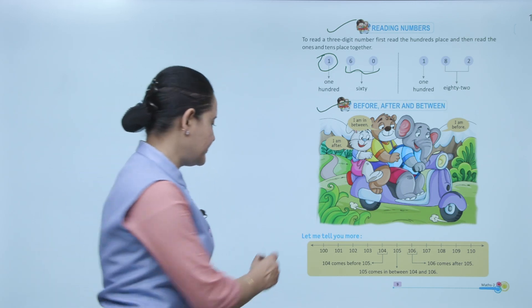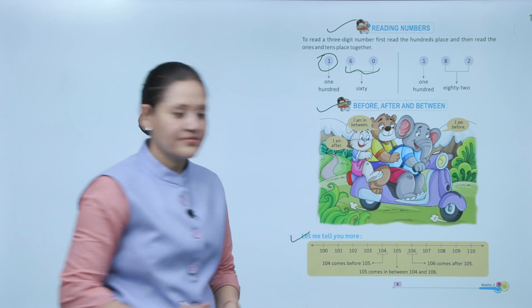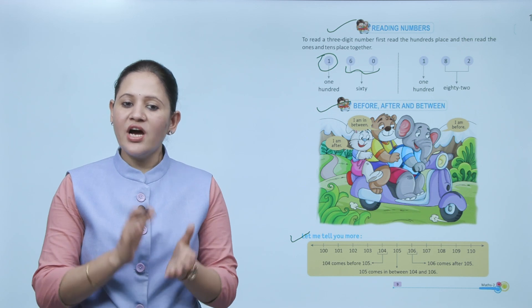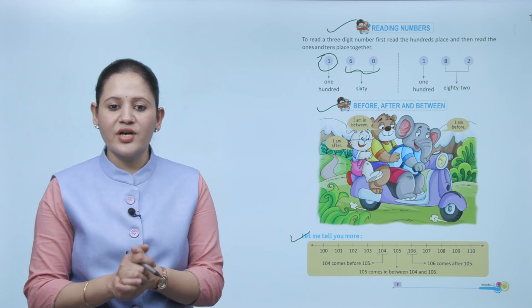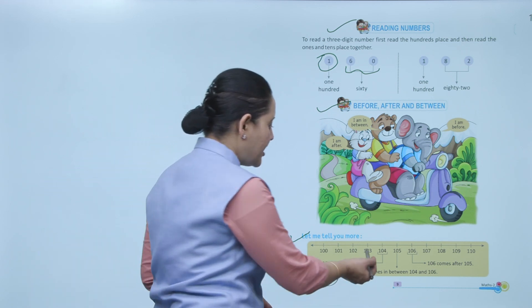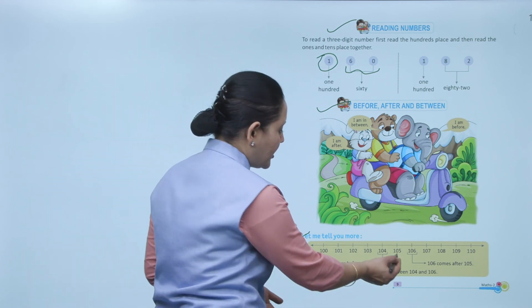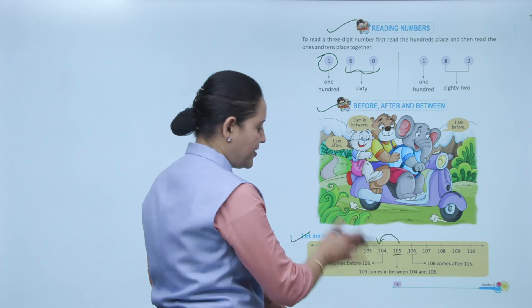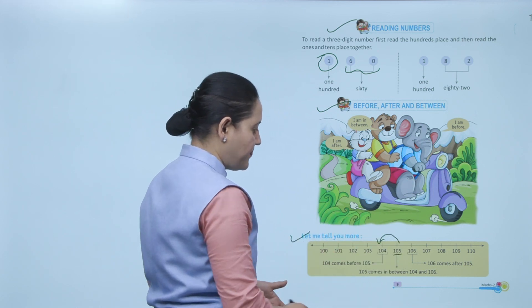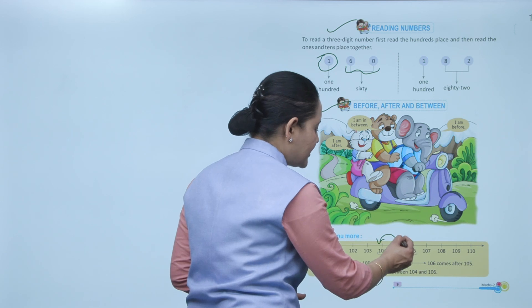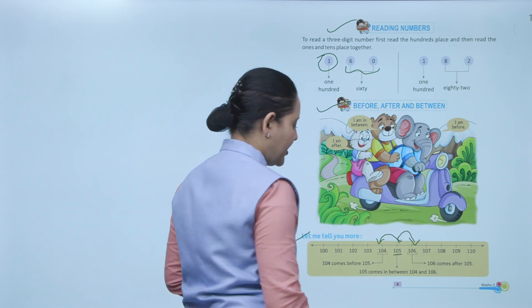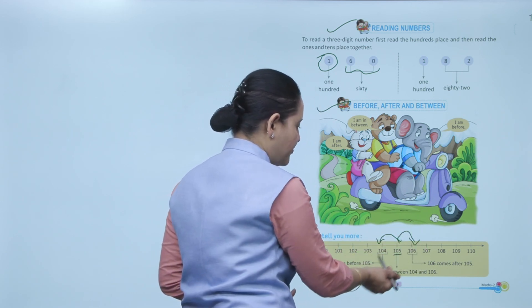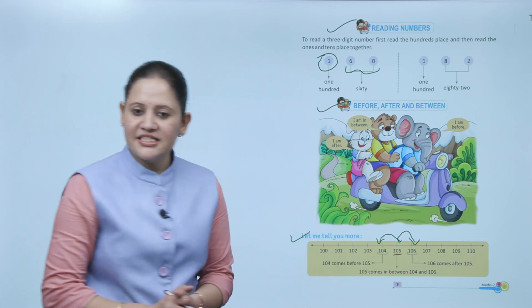Numbers are given: 104 comes before 105, and 106 comes after 105. Also, 105 comes between 104 and 106.